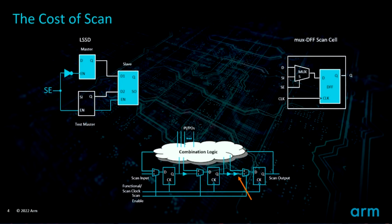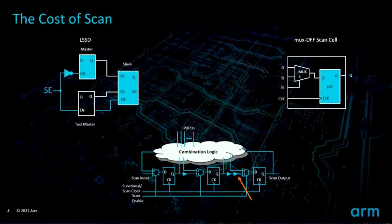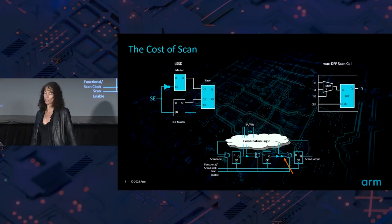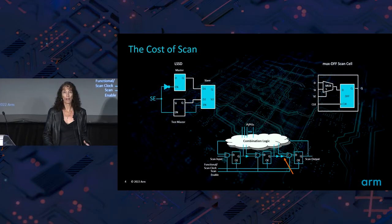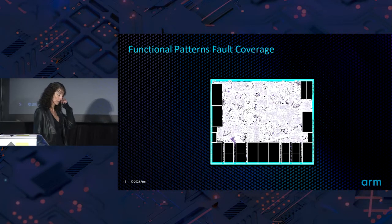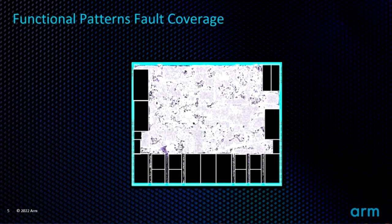So why do we add scan? When I first started in engineering, we didn't use scan — we only used functional patterns. Companies would do functional verification, take those patterns, run them through fault grading, and put them on the tester. While those patterns were good for verification, they weren't good for finding manufacturing defects because they had little holes. So they would leave one engineer on the design for multiple years to write more functional patterns. It would take years because the fault grade showed missing pieces, and it was really hard to write a functional pattern that would capture all those areas.